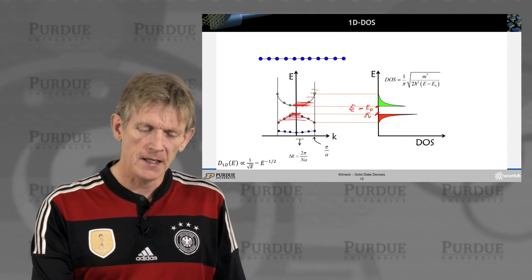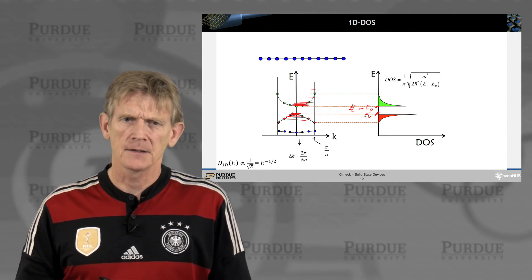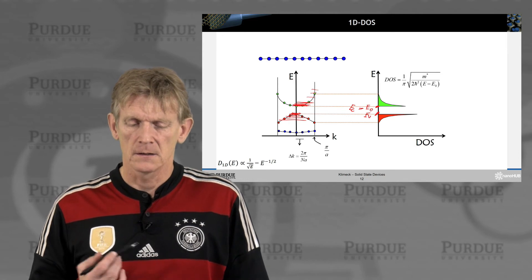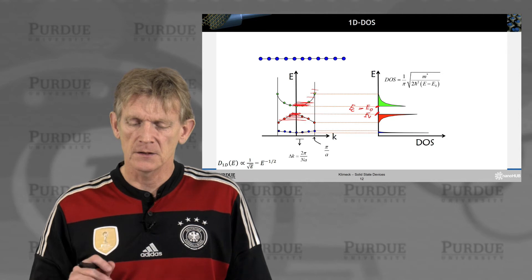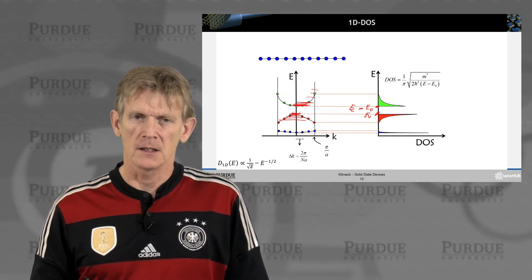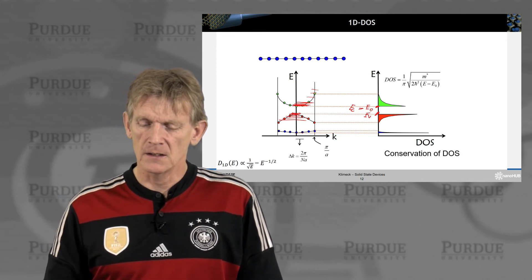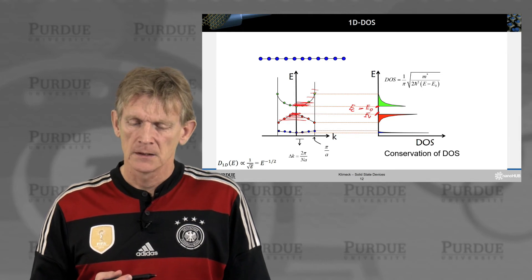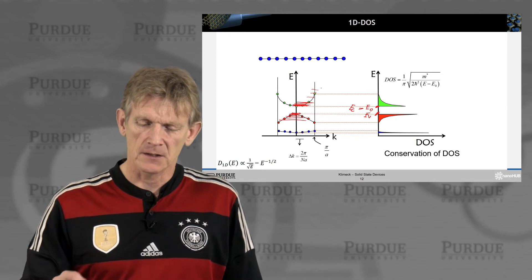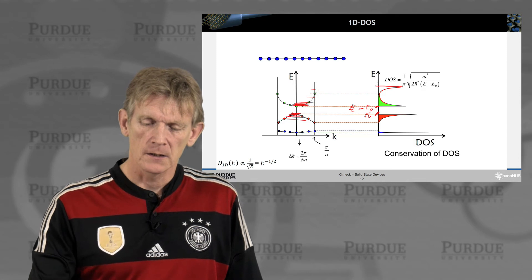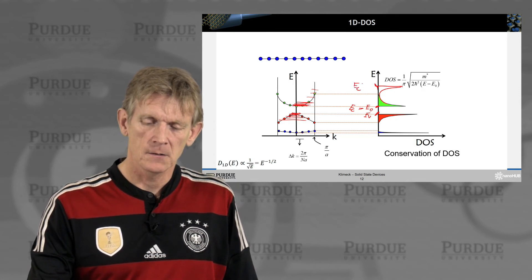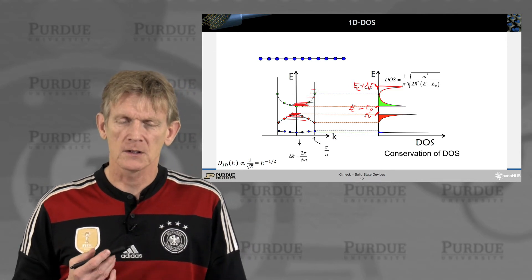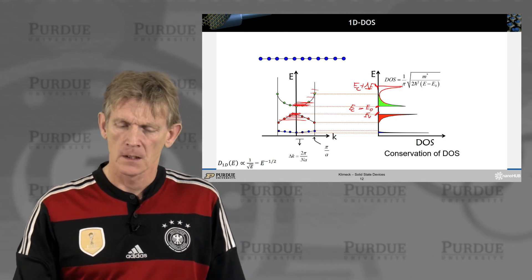So how would that look in energy space? We have collapsed the number of states in slivers here in k-space, and now we can plot it. It goes as m star over (E minus E0) as the square root. So this thing certainly has a pole here at E0, and then it decays as a function of 1 over square root of E. That means the higher you go in energy, the less states you have. Most states in 1D are piled up close to E0. Now for different bands, like the valence band below, the dispersion looks flipped. It has a pole here at EV, and we would call this EC typically.